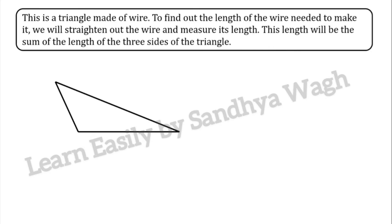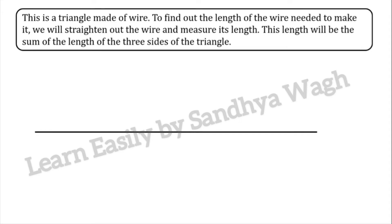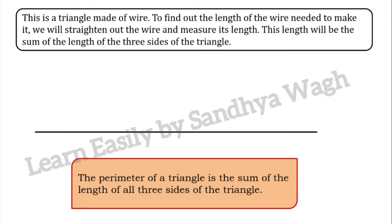This is a triangle made of wire. To find out the length of the wire needed to make it, we will straighten out the wire and measure its length. This length will be the sum of the length of the three sides of the triangle. The perimeter of a triangle is the sum of the length of all three sides.